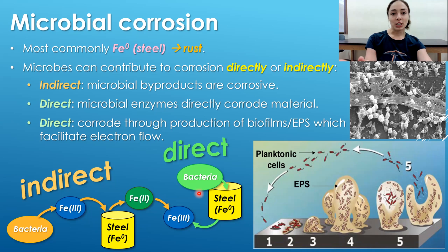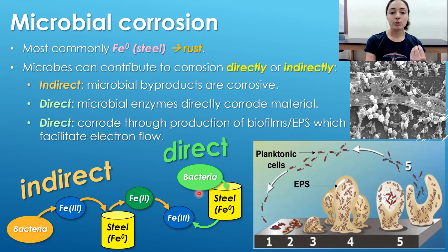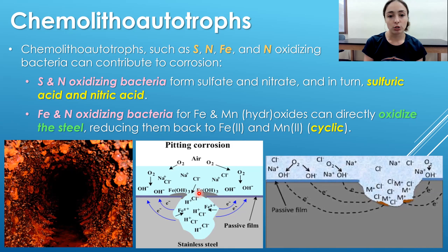Now let's get into those three major groups of microorganisms that contribute to corrosion. The first group is chemolithoautotrophs. These bacteria include those that like to oxidize sulfur, nitrogen, iron, and manganese compounds.